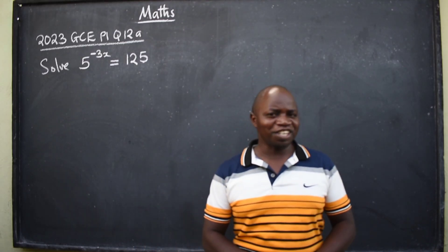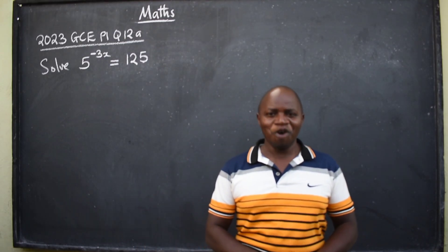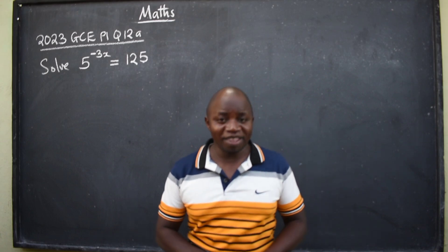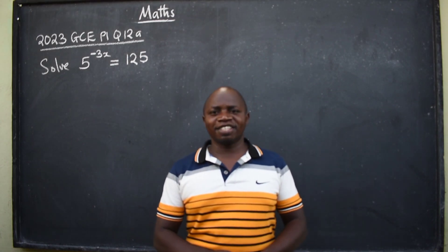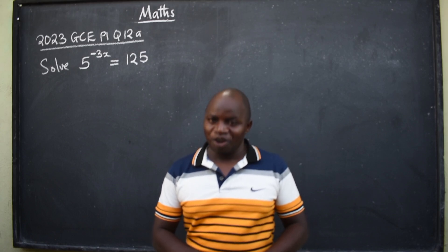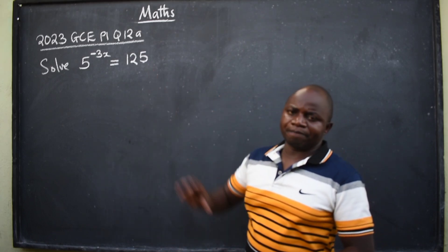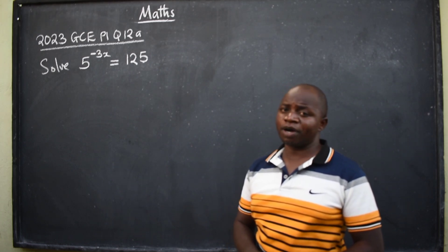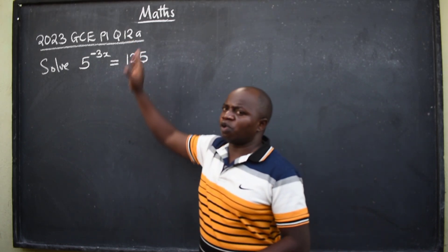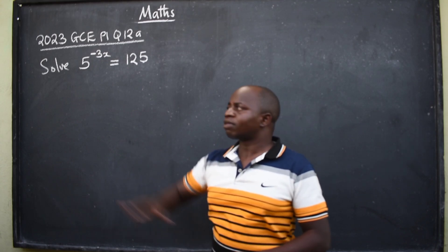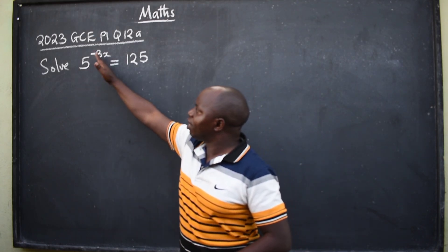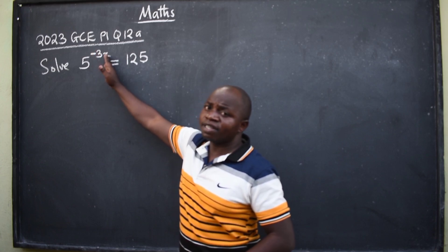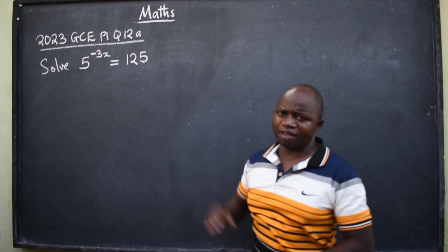Greetings ladies and gentlemen. Hope you are doing fine. This is mathematics. In this lesson we want to look at this question from the 2023 GCE paper 1 — this was question 12a: Solve 5 raised to the power negative 3x is equal to 125.